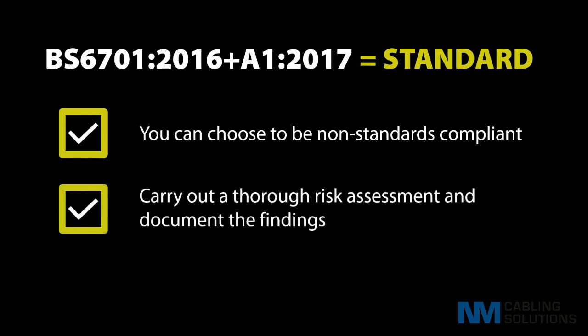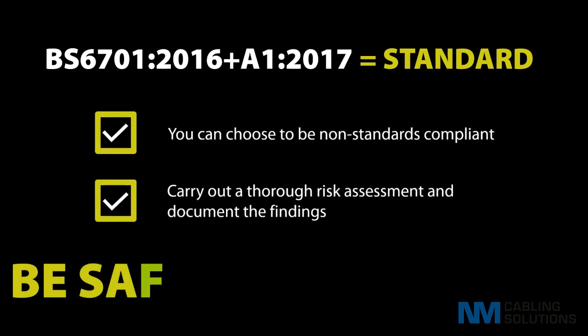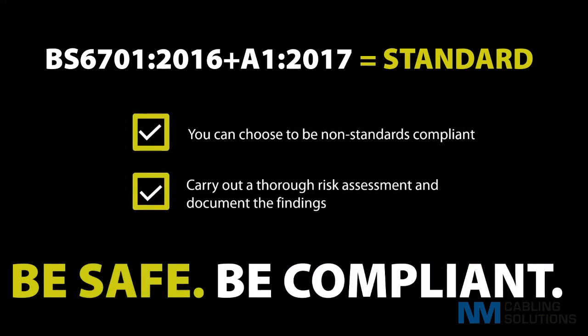Finally, BS 6701 is currently a standard, therefore you can choose to be non-standard compliant, or you can carry out what is known as a BS 9999 risk assessment to justify the downrating of the building's requirements. However, if you want to be safe, be compliant.